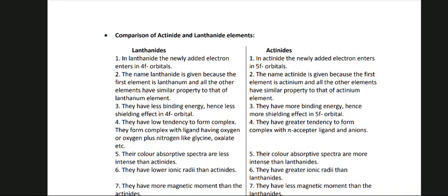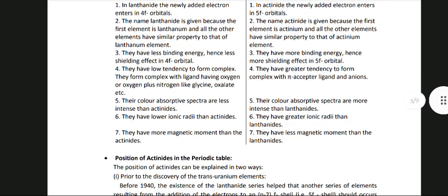Lanthanides have a low tendency to form complexes; they form complexes with ligands having oxygen or oxygen plus nitrogen, like glycine, oxalate, etc. Actinides have a greater tendency to form complexes with pi-acceptor ligands and anions. The color absorption spectra of lanthanides are less intense than actinides, while the color absorption spectra of actinides are more intense than lanthanides. Lanthanides have lower ionic radii than actinides, while actinides have greater ionic radii than lanthanides. Lanthanides have more magnetic moment than actinides, and actinides have less magnetic moment than lanthanides.